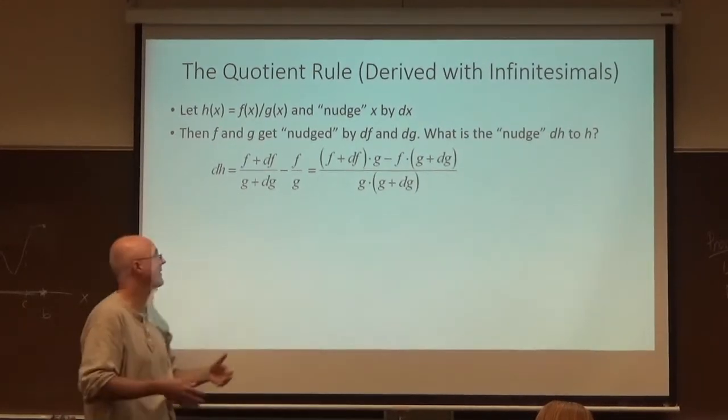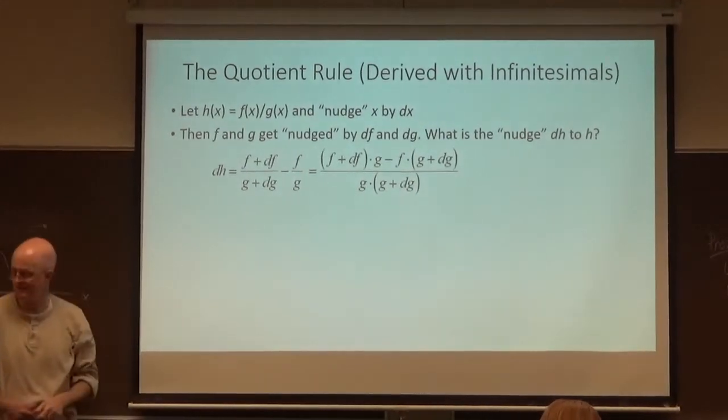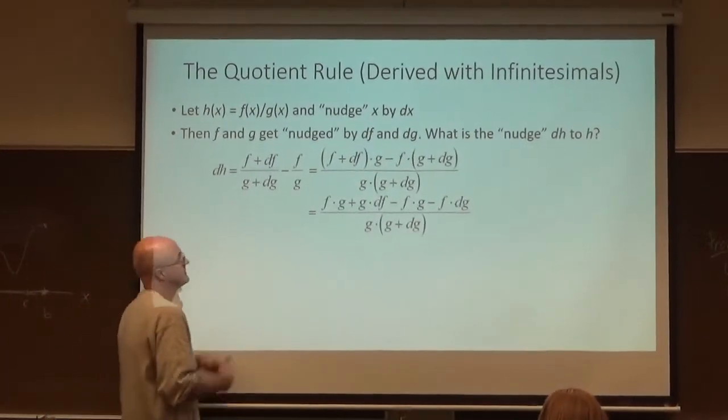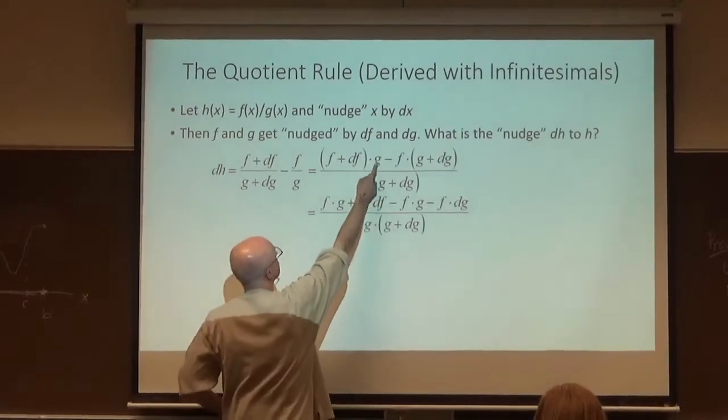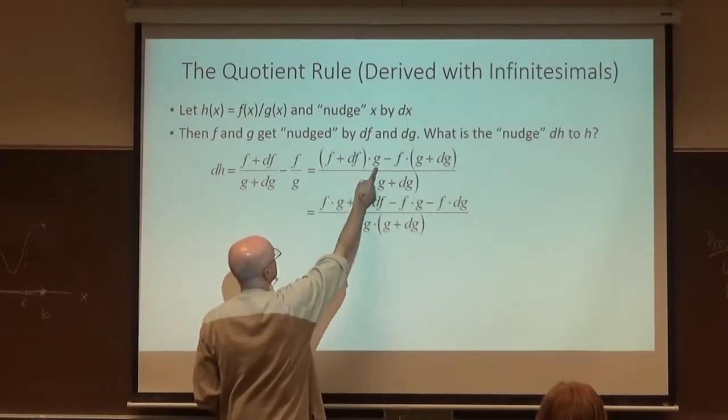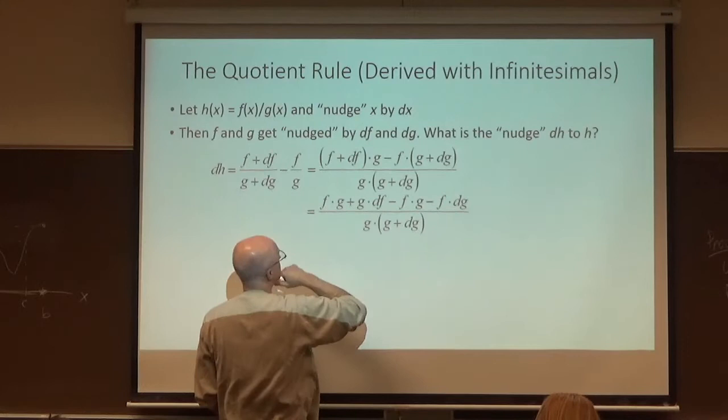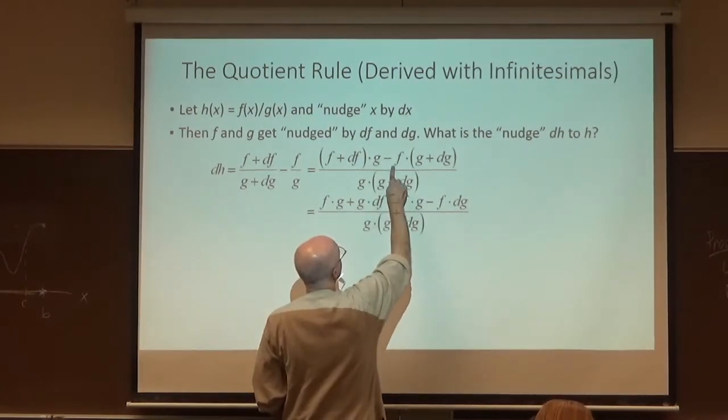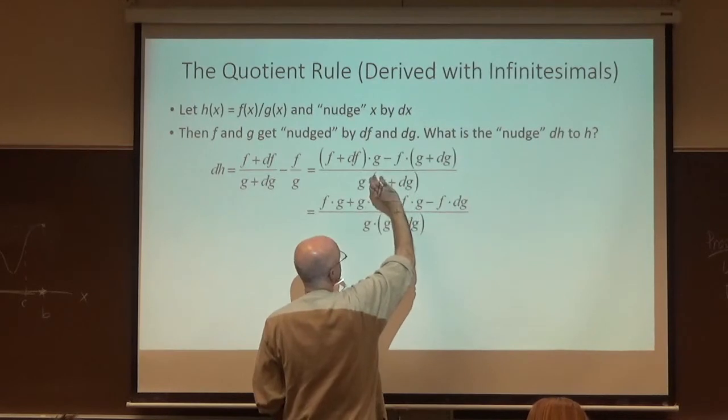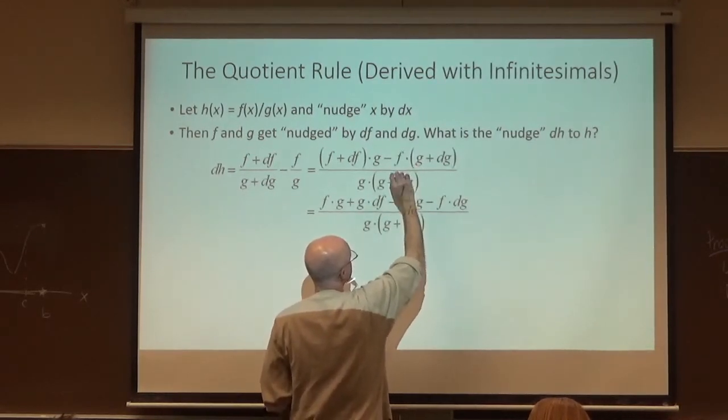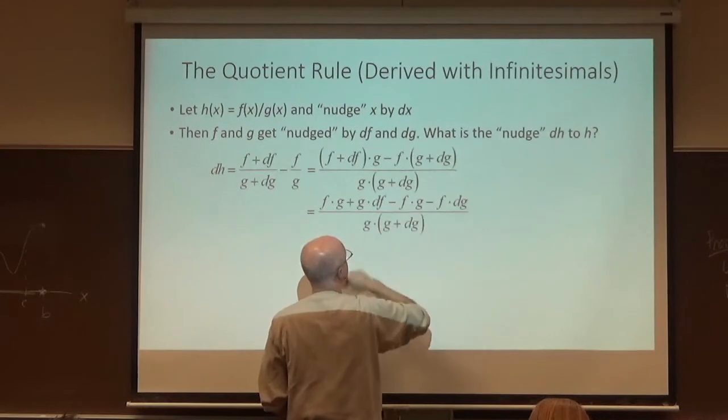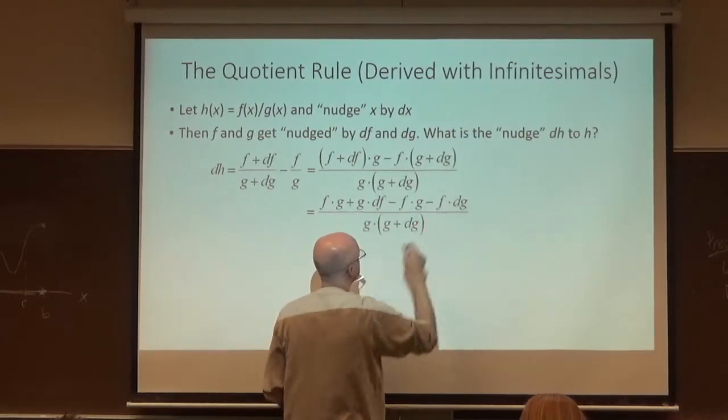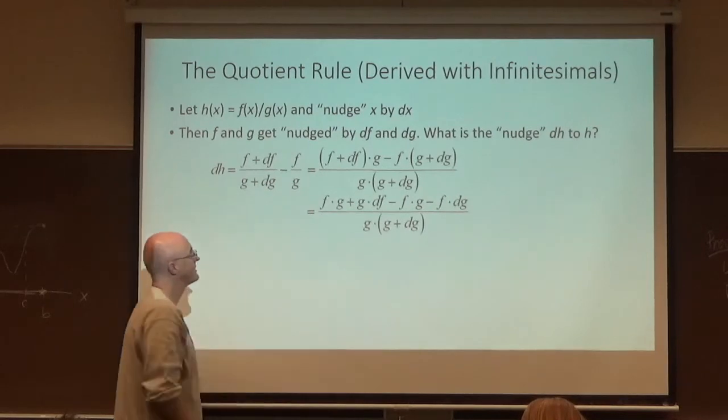Again, the x is in the background. We're just not bothering to write it. Do a bit of simplification. Use the distributive property. Multiply the g through here, f times g, and then you also get g times df. Subtract f times this. In other words, essentially multiply through the parentheses, negative f through the parentheses. So you have two negative signs. You've got minus f times g, and you also have minus f times dg.